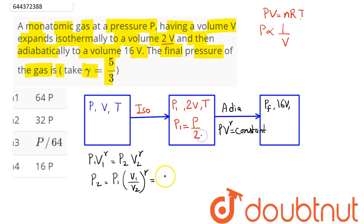So this comes as initial pressure P divided by 2. Here V1 is 2V and V2 is 16V, power gamma is 5 divided by 3. So this comes as P by 2 and this becomes 2V by 16V is 1 by 8, power 5 by 3 and 8 is 2 cubed.